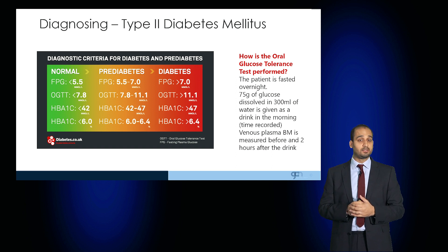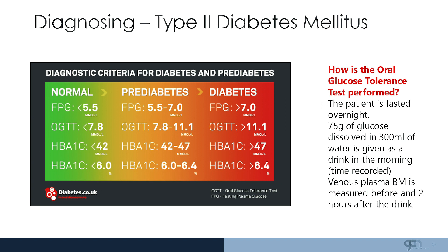HbA1c can also be used. HbA1c measures the glycosylation of red blood cells over approximately three months, which is the lifespan of a red blood cell. A value of less than 42 millimoles per litre is normal, above 47 is diagnostic of diabetes, and between 42 and 47 millimoles per litre suggests pre-diabetes.